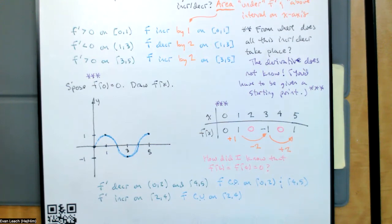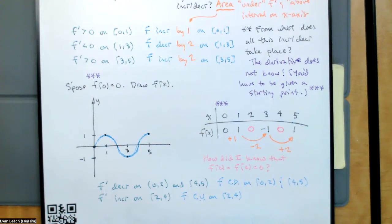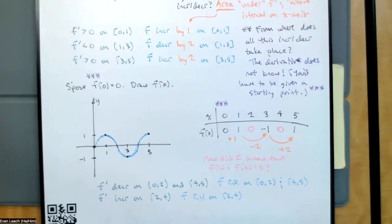This raised an important question: how did I know that f of 2 and f of 4 were both equal to zero, aside from the fact that I wrote the problem and decided that?